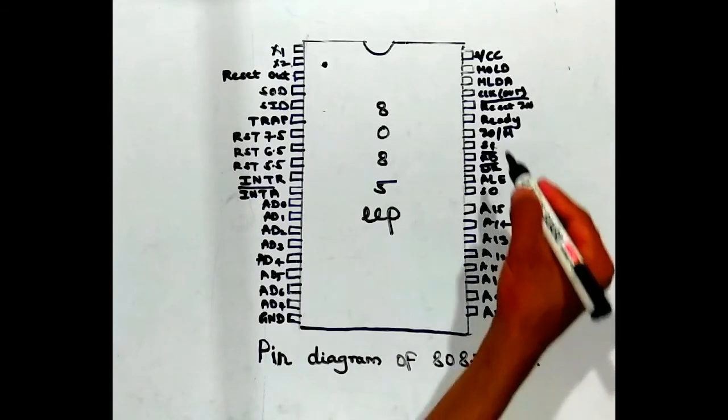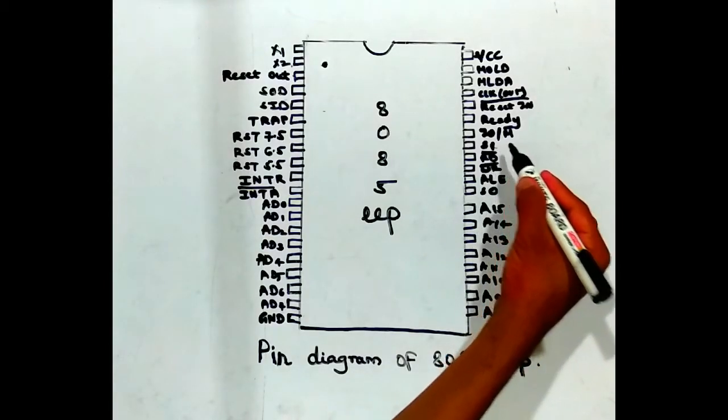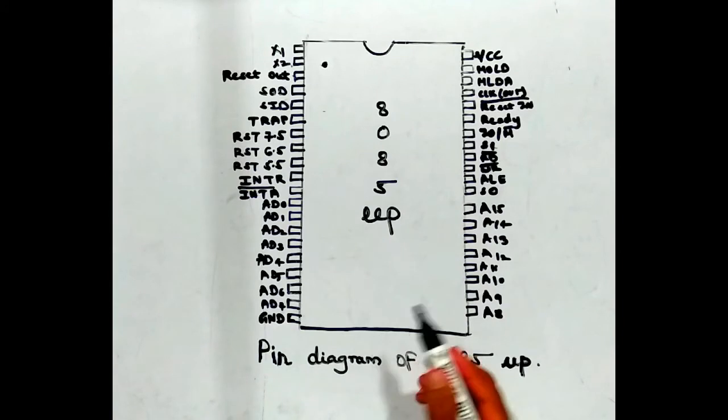The 29th pin is S0 and the 33rd pin is S1. These are output status signals used to give the status of operations performed by the microprocessor.